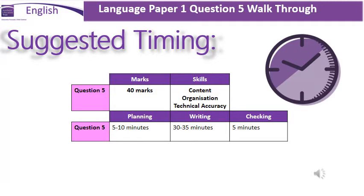You get an overall time of 45 minutes to complete this question. We recommend that you spend 5 to 10 minutes planning your response and 30 to 35 minutes writing it. Remember, the examiner doesn't want pages and pages — they ideally want a side and a half to two sides of A4 of well-crafted description. I would recommend that you spend time checking your writing throughout, not just at the end. Strongly recommend that after you have written each section, you spend a minute or so checking it carefully.